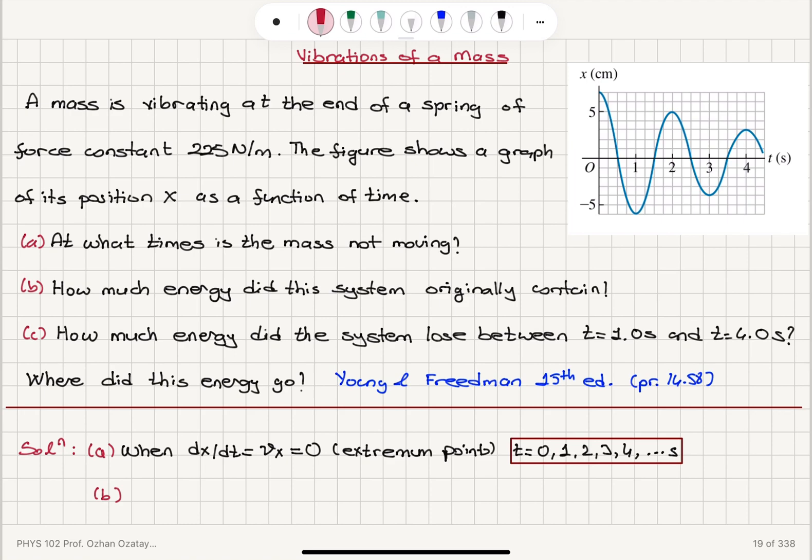So what is the original energy of the system at t equals zero? At t equals zero, we have an extremum point. So v equals zero, dx/dt is zero. Therefore, the kinetic energy is zero. So we have only potential energy, which is one over two kx squared, the energy stored in the spring.